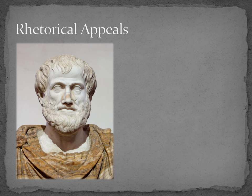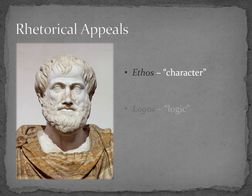Back in 300 BC, written language as we know it was still emerging. Most people received information and entertainment through verbal communication. When a new law came out, you learned of it verbally. When a grand ceremony was going to be held in the town square, you learned of it verbally. In Aristotle's eyes, a speaker, also referred to as an orator, could convince his or her audience through the combination of three kinds of appeals. Even today, we still refer to these three appeals or strategies by their Greek identifiers: ethos, logos, and pathos.